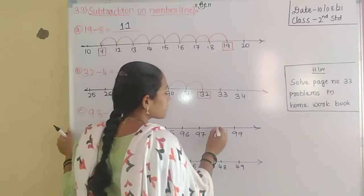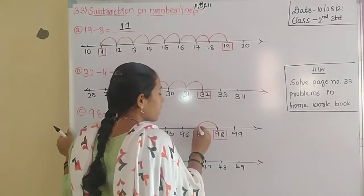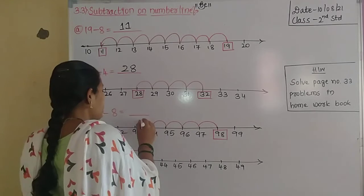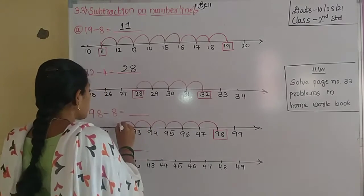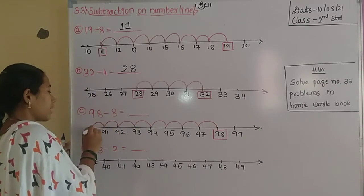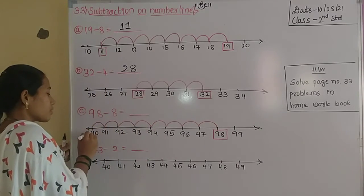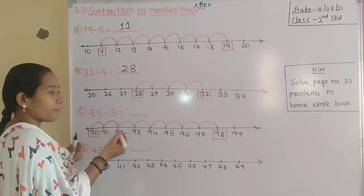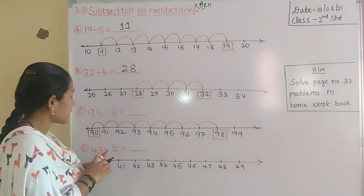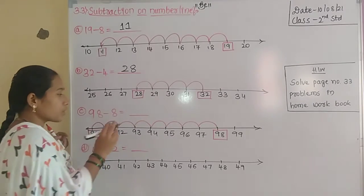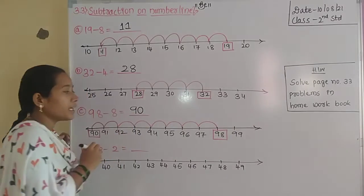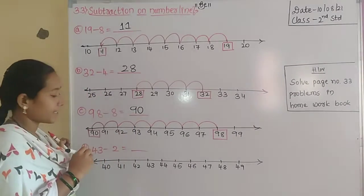Move 8 steps backward — 1, 2, 3, 4, 5, 6, 7, 8 — 8 steps backward from 98. Here we get the number 90. So the difference is 90.